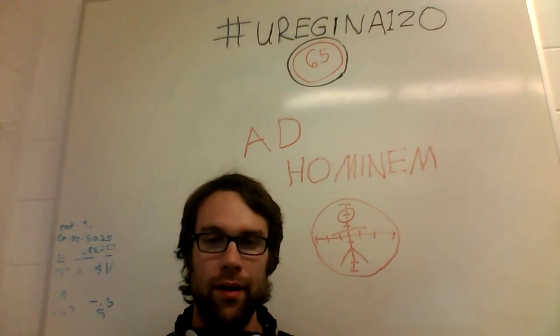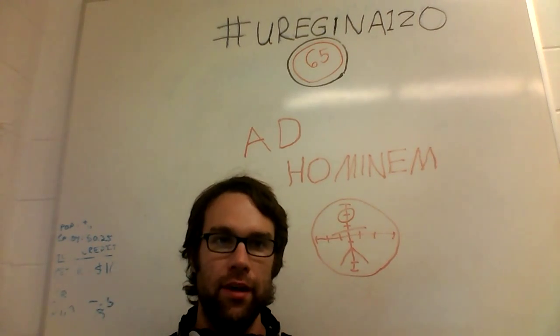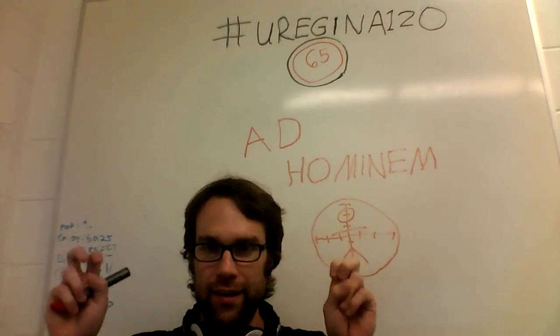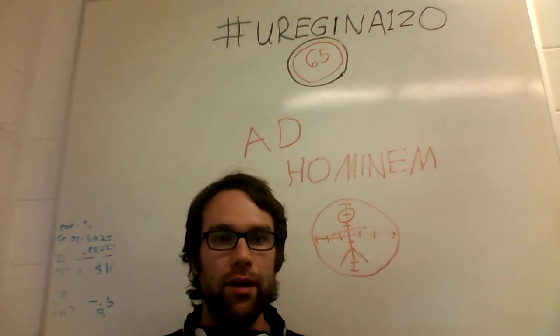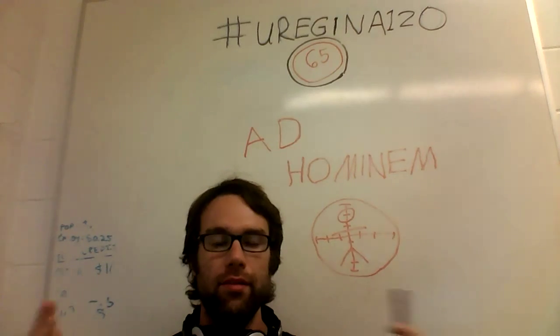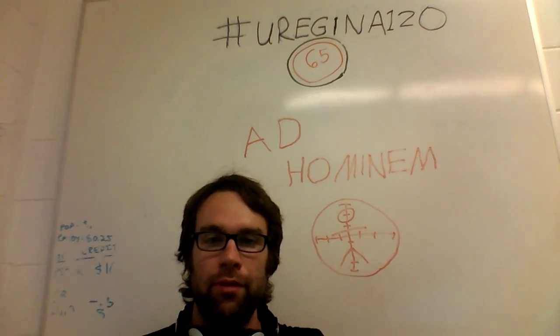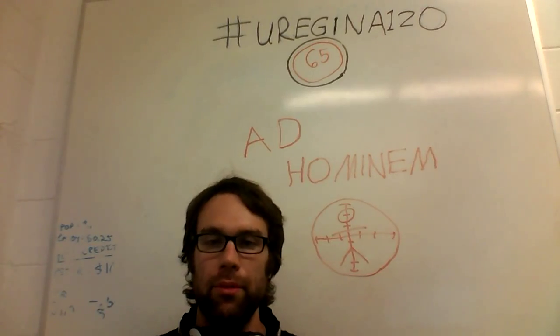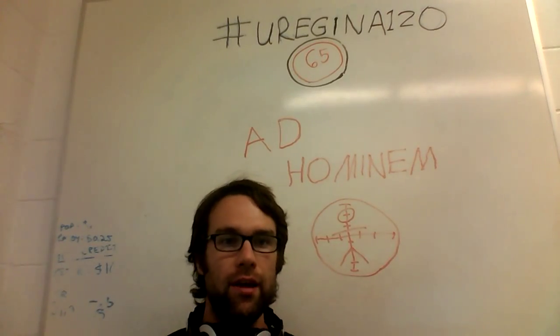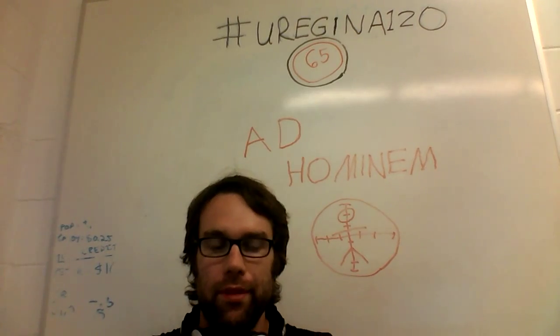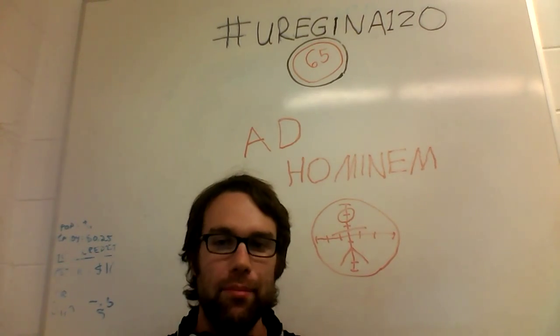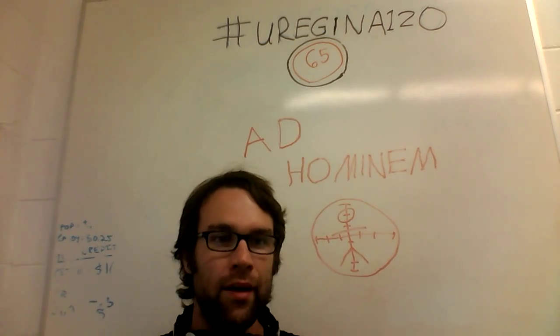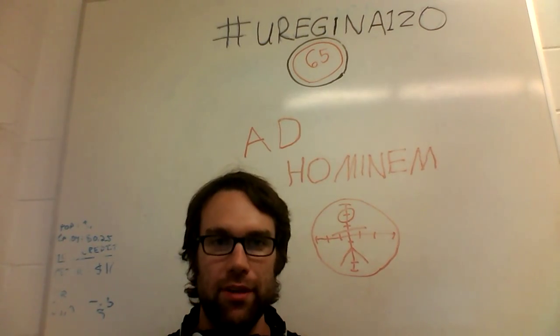The ad hominem attack or logical fallacy, otherwise known as character assassination or a personal attack, is when you, instead of attacking the argument or finding something wrong with the content of what someone says, you instead just make a statement relating to their character, usually to make them look bad, or to basically attack them rather than their argument.